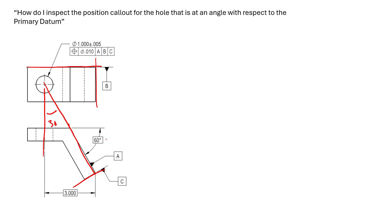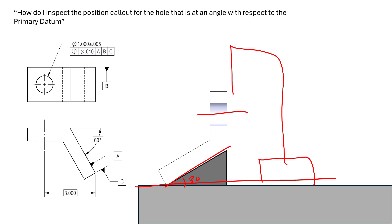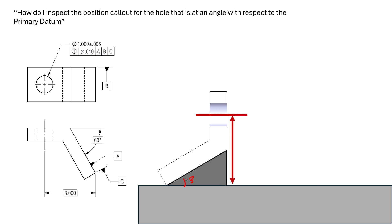So this gets a little tricky — how do you inspect the location of this angled feature with respect to the datum reference frame? A quick first setup might look something like this: we could use a 30-degree angle block to set our datum feature at an orientation with respect to our inspection surface — our granite table with our height gauge on it — and then inspect the vertical distance of this hole back to a known angled surface with respect to our datum plane.